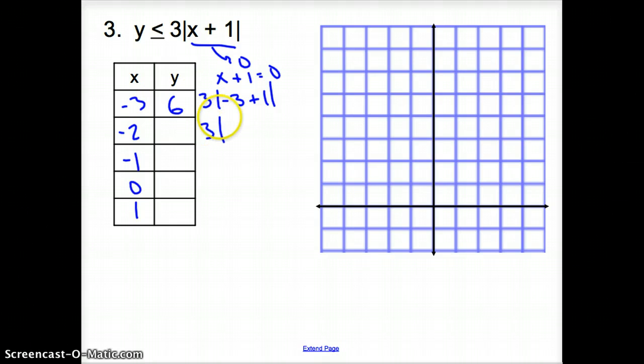Absolute value of negative 2 is 2 times 3 is 6. Same thing. Keep going. We have 3 times the absolute value of negative 2 plus 1. Negative 2 plus 1 is negative 1. The absolute value of negative 1 is 1 times 3 is 3. As we keep rocking, I'll write it down one more time. We have negative 1 plus 1. Yep.